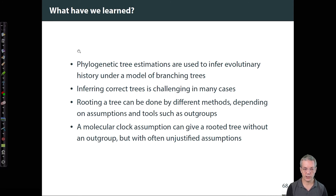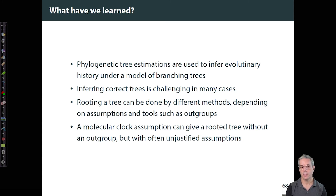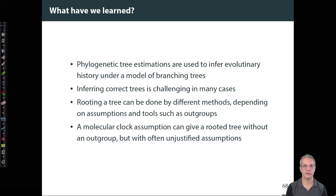Inferring correct trees is challenging in many cases, and it may be due to things like horizontal gene transfer, but it also may be complicated by vertical gene transfers, such as gene duplication and gene loss.